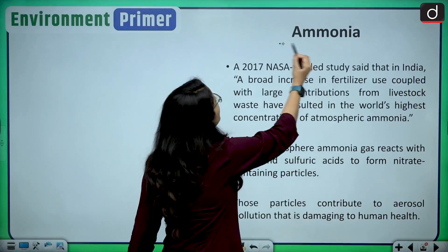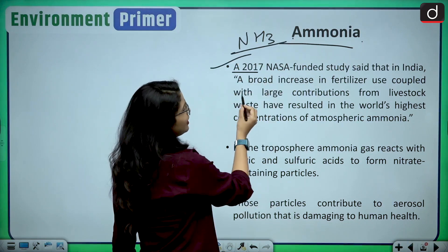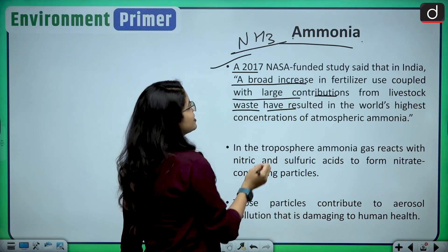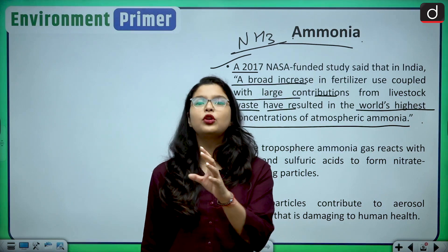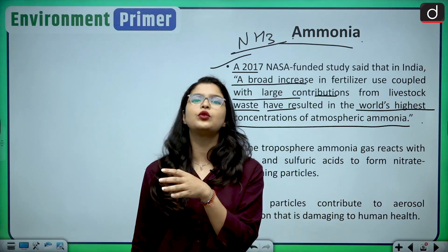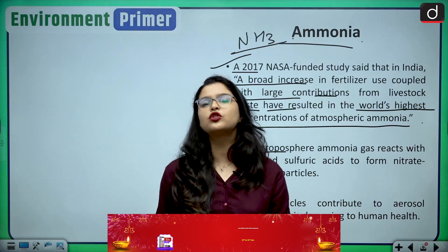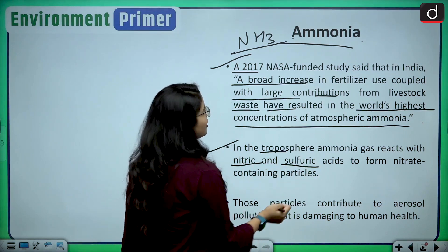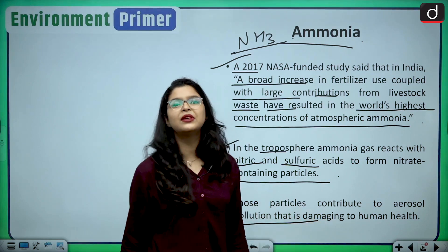Then comes ammonia, or NH3. A 2017 NASA-funded study said that in India, a broad increase in fertilizer use coupled with large contributions from livestock waste have resulted in the world's highest concentration of atmospheric ammonia. In the troposphere — the layer of atmosphere where most human life survives — ammonia gas reacts with nitric and sulfuric acids to form nitrate-containing particles.